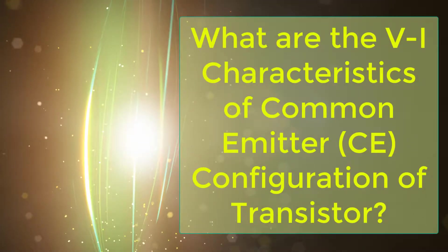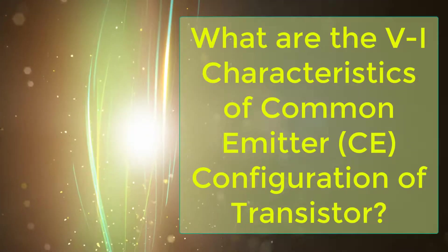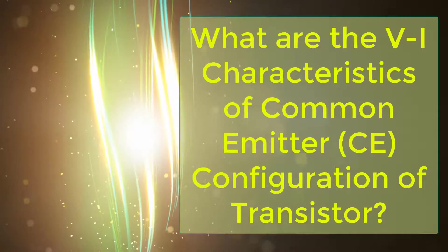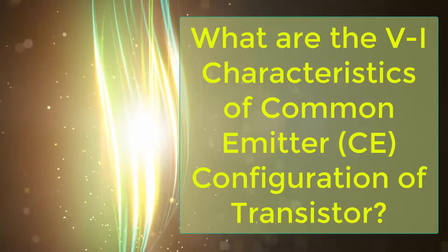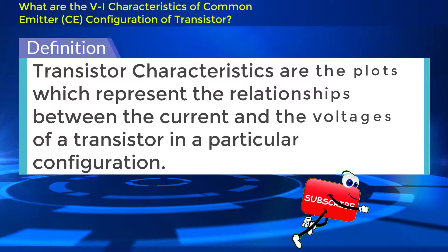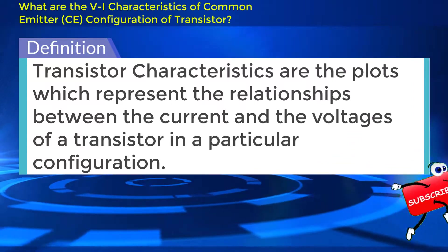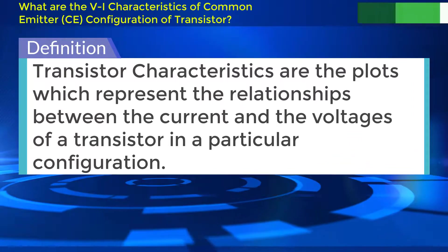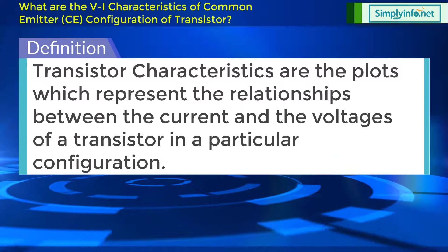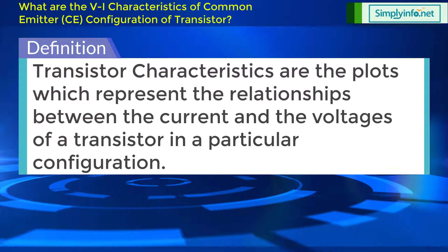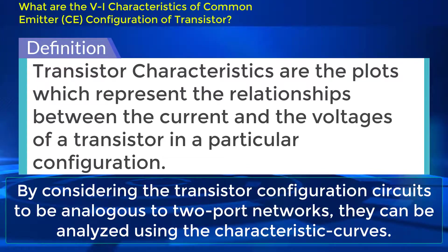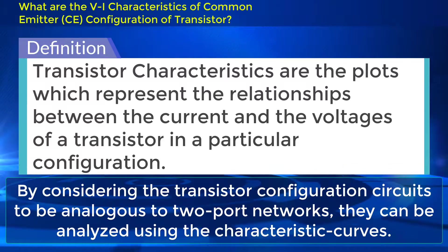What are the VI characteristics of Common Emitter configuration of Transistor? Transistor characteristics are the plots which represent the relationships between the current and the voltages of the transistor in a particular configuration. By considering the transistor configuration circuits to be analogous to two port networks, they can be analyzed using the characteristic curves.